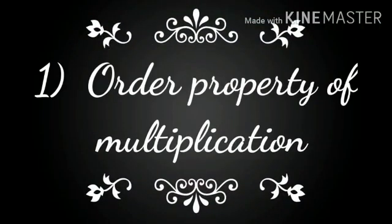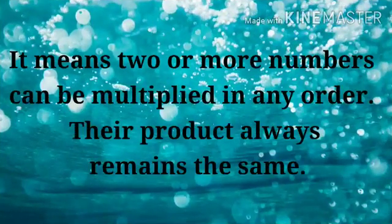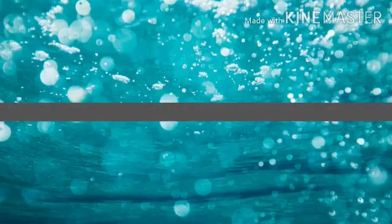Now let us study about its first property, that is order property of multiplication. It means two or more numbers can be multiplied in any order. Their product always remains the same.